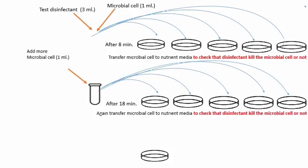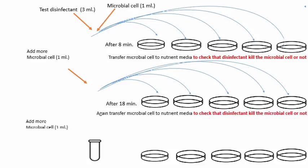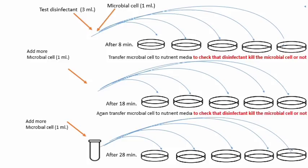Same procedure phir se repeat kiya jaata hai. Is tarah jo test disinfectant hai woh teen baar microbial cells ke contact mein aata hai. Teesri baar bhi after 10 minutes — yani at the 28th minute — hum phir se sampling karenge petri dishes mein, aur check karenge ki jo microbial cells hain wo kill hui hain ya nahi. Is tarah teen baar disinfectant ko microbial cells ke against check kiya jaata hai. Agar koi disinfectant first two steps mein bacteria kill karta hai to use pass kar diya jaata hai — yani agar pehli do steps mein koi bhi bacterial growth observe nahi ho rahi hai, to aise test disinfectants ko pass declare kar diya jaata hai.